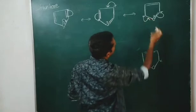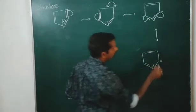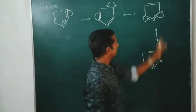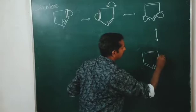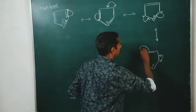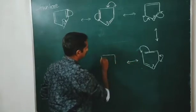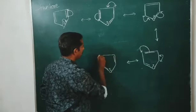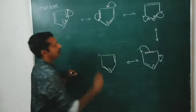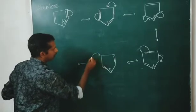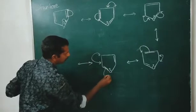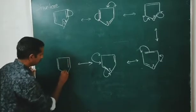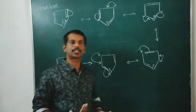In further resonance structures, oxygen bears three bonds and a positive charge. Eventually, the electron pair shifts back, and in the last structure the lone pair returns to oxygen — giving back the original structure. These are the resonance structures of furan.